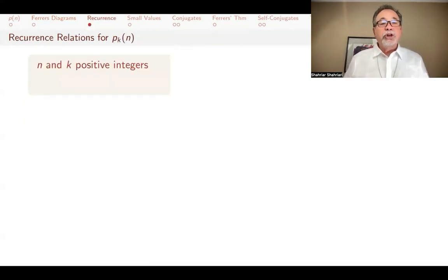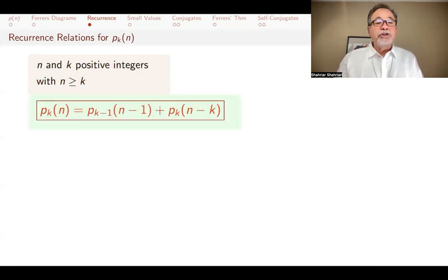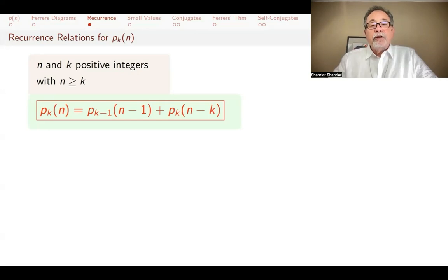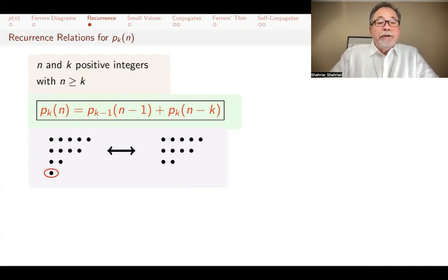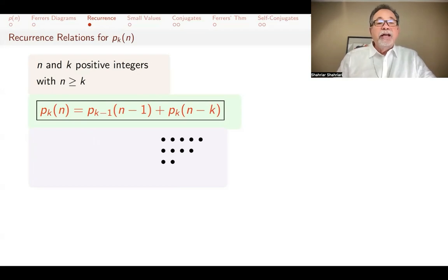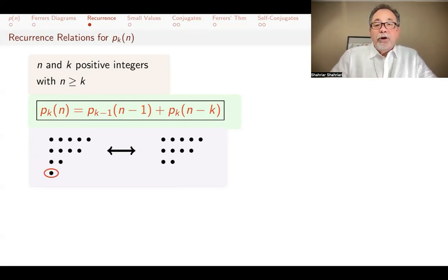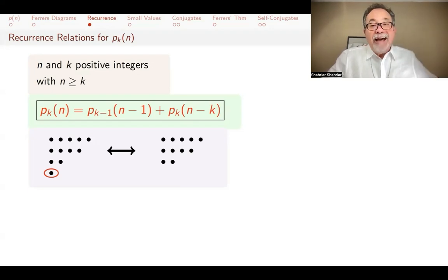In the previous video, I showed recurrence relations for p of n sub k, and I can show those using Ferrer's Diagrams as well. If n is greater than or equal to k and both are positive integers, the number of partitions of n into k parts equals the number of partitions of n minus 1 into k minus 1 parts, plus the number of partitions of n minus k into k parts. If the last part — the smallest — is size 1, and you get rid of it, you get a partition of n minus 1 into k minus 1 parts, because you've removed one row. And vice versa: adding a 1-dot row at the bottom gives a partition of n into k parts.